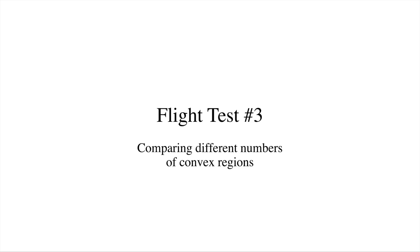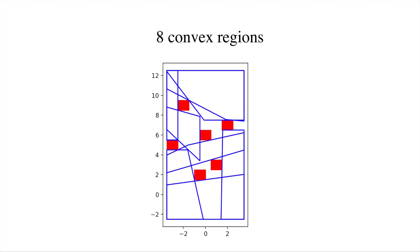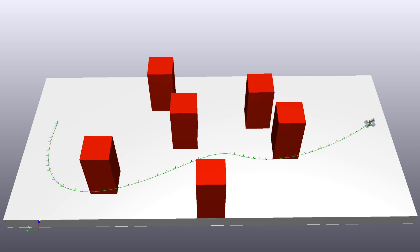For the last and final flight test, I'm going to compare different numbers of convex regions to see how this affects the generated trajectories. First, the planner is allowed to compute eight convex regions. This results in the following trajectory where the quadrotor can be seen flying on the outside of the last obstacle.